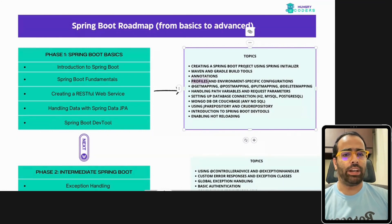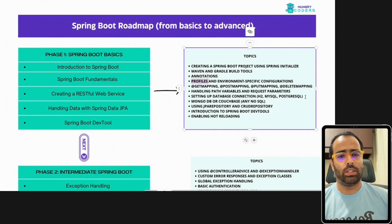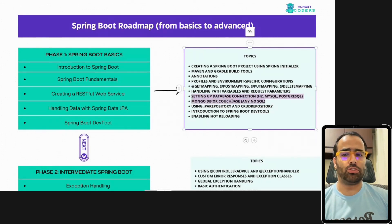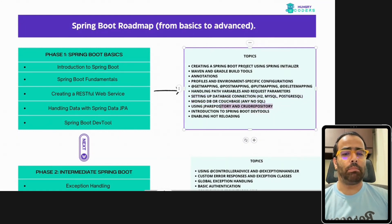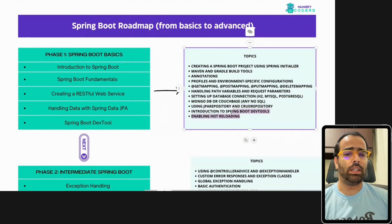Once done with annotations, you should know how to set up profiles and play with configuration using application.yml files. Then you should set up a database using either H2, MySQL, MongoDB, or CouchBase. You should know how to handle databases, how to use JPA Repository and CrudRepository — these are heavily used in production applications. Also learn dev tools like how to enable hot reloading, which are essential for developers.